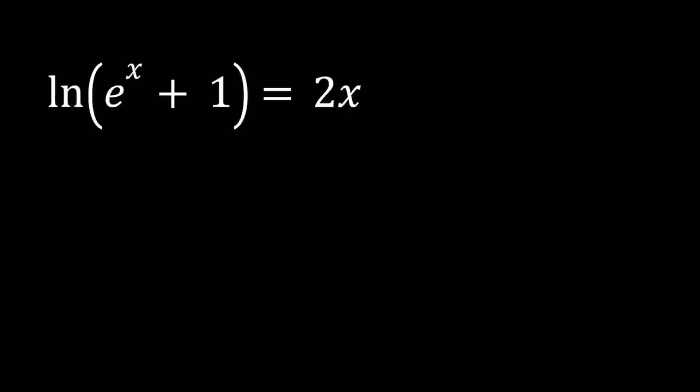So let's go ahead and either use the definition of logarithms or you can do e to the power both sides. e^(ln(e^x + 1)) = e^(2x). Now the rule says e^(ln(something)) equals something, so this becomes e^x + 1 and the right hand side is e^(2x).